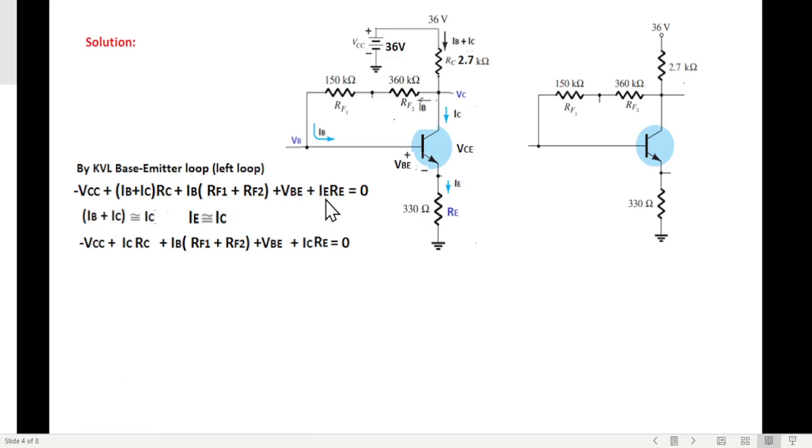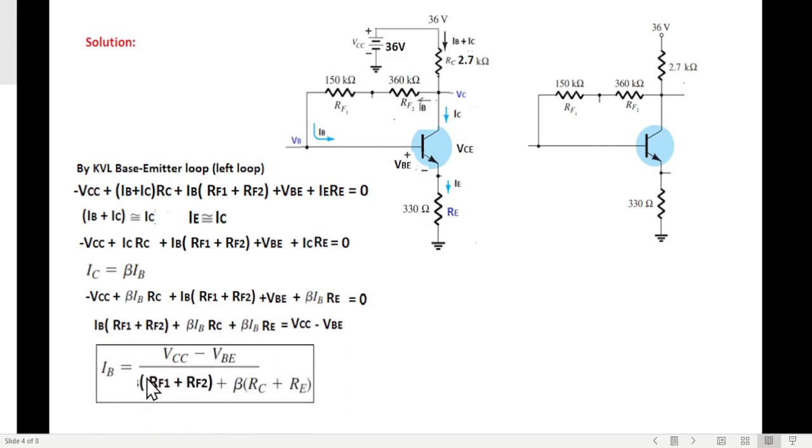Now putting all these, our equation will become: minus VCC, this will become IC RC, then this remains same, this remains same, IE is changed to IC RE. Now we have to eliminate IC as well. We just want to find IB from the left loop. So we will use IC equals beta times IB. We replace IC by beta times IB here and here. Now arranging and taking common, we get this relation, this equation. And from here IB will be VCC minus VBE divided by this term. So this is one equation that we'll use.